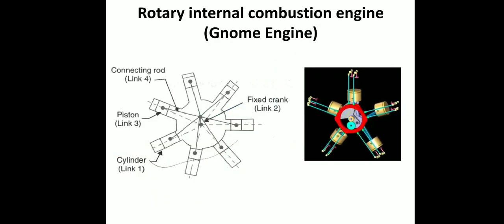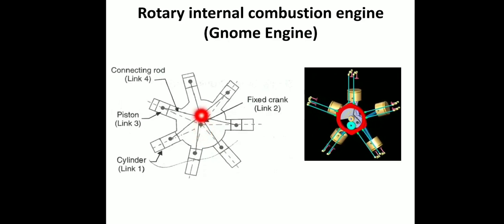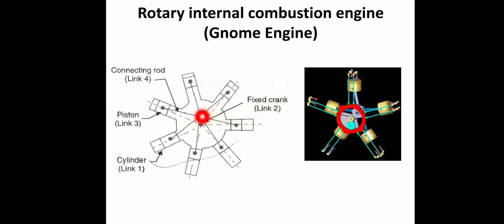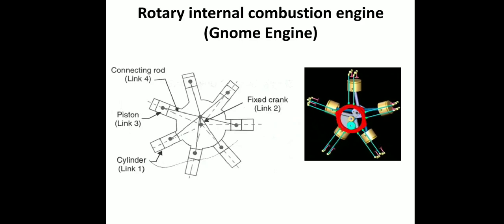The third inversion is the rotary internal combustion engine — the type you learn about in thermodynamics. In this case, the crank is fixed. The crank corresponds to the fixed point, and the cylinders rotate around it. One cylinder is determined by the motions. We have link 1 as the crank, then the piston, then link 3. This is the rotary internal combustion engine, the third inversion of the slider crank mechanism.